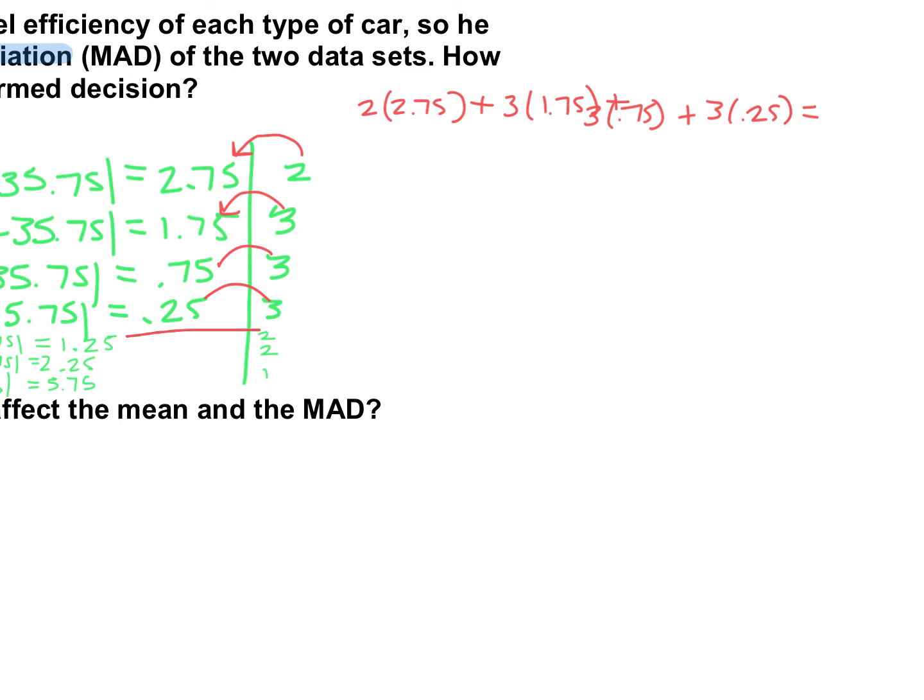We had three cars that were 0.25 away from the mean. We had two cars that were 1.25. And we had two cars that were 2.25. And one car that was 5.75. So if we add all of that together, we get 26. And there were 16 cars in this data set. So if we divide that by 16, we get a mean absolute deviation of about 1.63.